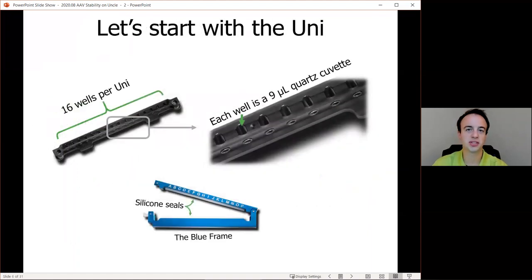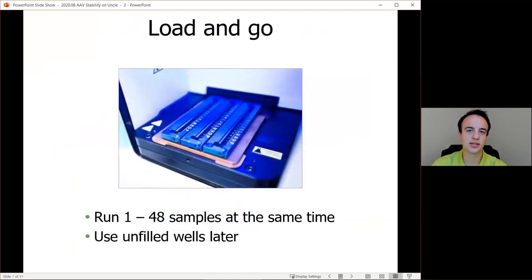So that brings us to the uni, which is what makes all this possible. And it helps make UNCLE truly unique because it provides high throughput and a small sample size. Each uni is 16 quartz microcuvettes that hold nine microliters of sample, and then they are enclosed within two silicone seals, making sure that the sample is sealed tight and is not prone to evaporation or leakage. It can actually be frozen and placed in the actual uni itself. But in this case, we actually close the uni around the sample, and then we load it onto the heating element of the UNCLE, where we can run from one to 48 samples at the same time, use whatever we don't want to load later.